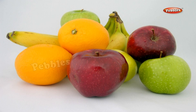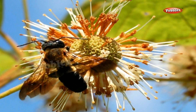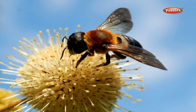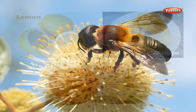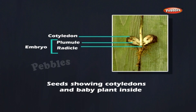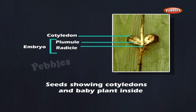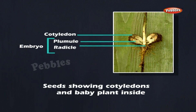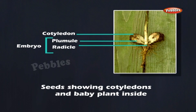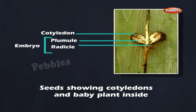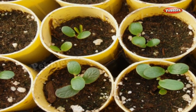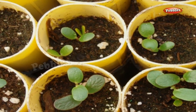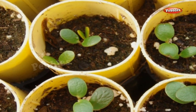A fruit is generally made up of a fruit wall and seeds, as seen in the cutaway view of a mango, lemon, and apple. All seeds contain a baby plant called the embryo. The embryo contains the plumule, which grows into the shoot, and the radicle, which grows into the root. The seed leaves or cotyledons contain food for the baby plant, and a seed coat protects the seed.